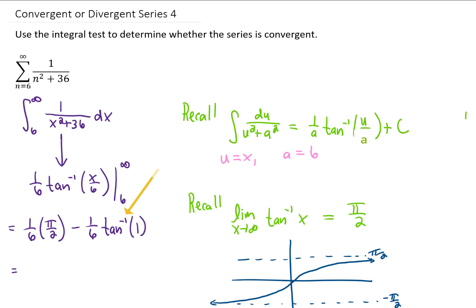You can think back to your unit circle, but the inverse tangent of 1 is the angle at which the tangent value is 1, which is pi over 4.